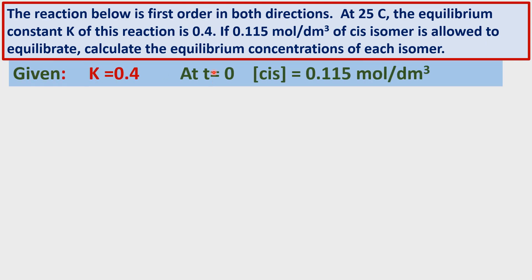Let us write the given data. In this problem, they have given the equilibrium constant for CIS-trans isomerization is equal to 0.4. The initial concentration of CIS isomer is equal to 0.115 moles per liter. Note: 1 decimeter cube is equal to 1 liter.